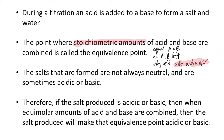Why do you want stoichiometric amounts of acid and base? So that you can calculate the number of moles of acid from the base, because you have equal or stoichiometric amounts of it. The salts that form are not always neutral — they can be acidic or basic. So if the salt produced is acidic or basic, then when equimolar amounts of acid and base are combined, the salt produced will make the equivalence point acidic or basic.